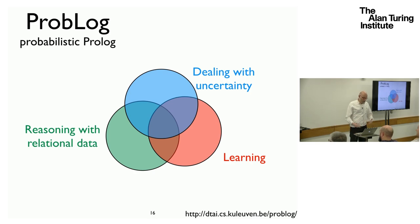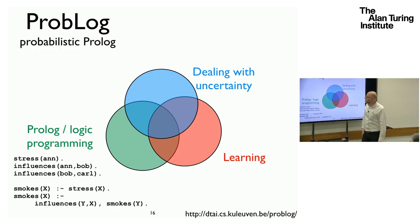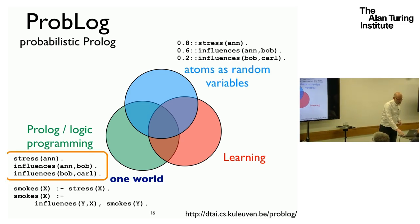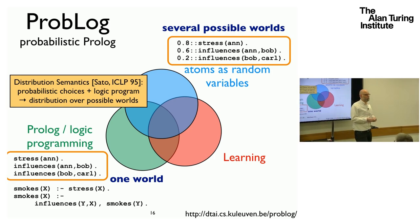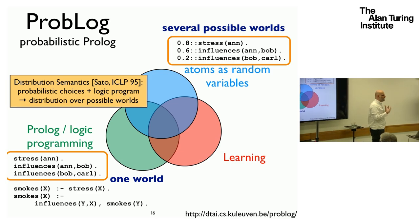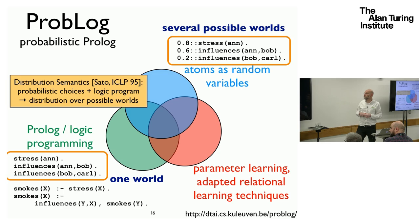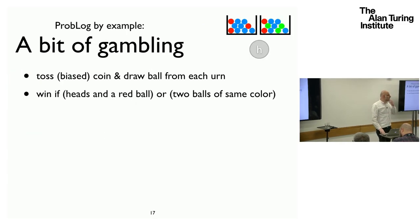In probabilistic Prolog, or ProbLog, what changes from a normal logical and relational representation is that facts which are deterministic in Prolog become true or false with a particular probability. These are the primitive random variables we work with, and this is all you need to define probabilistic languages that subsume most of what directed graphical models do. You can conceive learning at two different levels: learning the parameters, or learning the structure, which means learning the rules of the game.